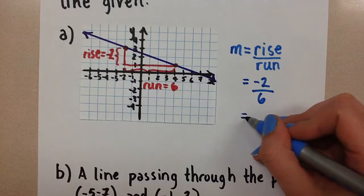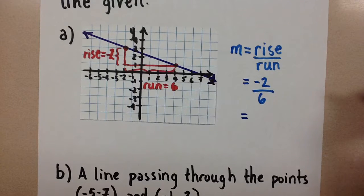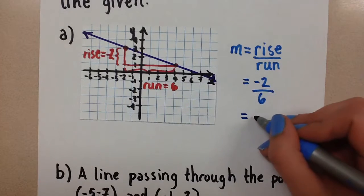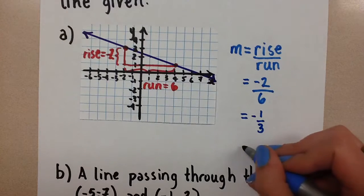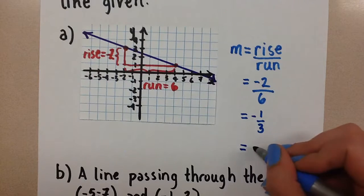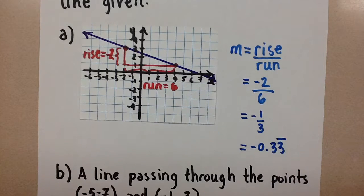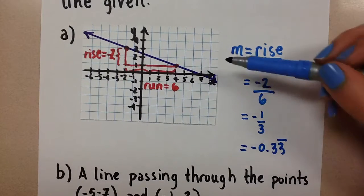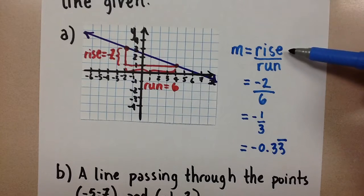We always want our answers to either be in simplest form, or we can do a decimal, but I do prefer the reduced fraction. So if we reduce this fraction we get negative 1 third. And if you prefer to use decimals then this would be negative 0.33 repeated. That's finding the slope if we're given the graph for the line using the formula slope equals rise over run.